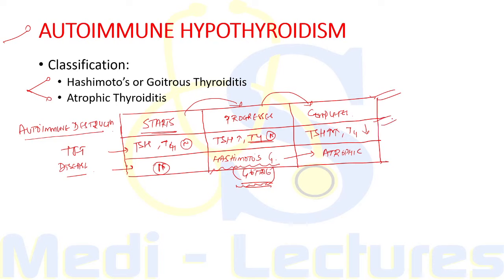Clinical hypothyroidism is characterized by complete atrophy of the gland, which is the late stage of Hashimoto's thyroiditis. Basically, in early stages of thyroiditis there is goitrous thyroiditis characterized by increase in size, and in later stages this is followed by atrophic thyroiditis.